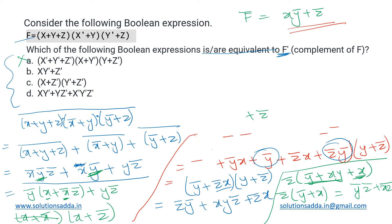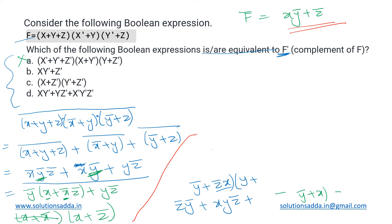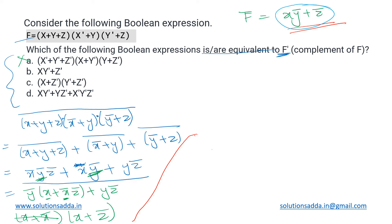Let us check option B. Note this is an MSQ type question so there can be multiple correct options. Option B is given as xȳ + z̄, and as we can see it is already in the simplest form — exactly the same as the value we got for f̄. So there is no need to check further; option B is directly correct.